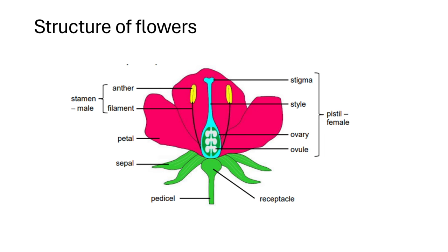This is the structure of a flower. The labels that are not that important are the sepal, the pericle, and the receptacle — these three are not usually asked in question papers or exams. The receptacle balances the whole flower at its base, and the pericle also supports the flower. The sepal's functions are not that important.